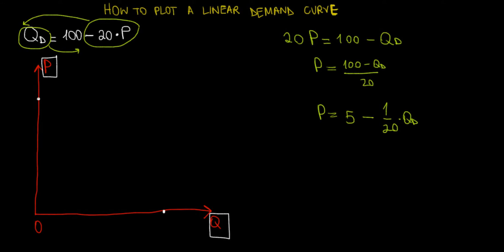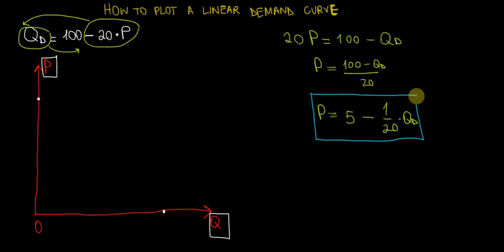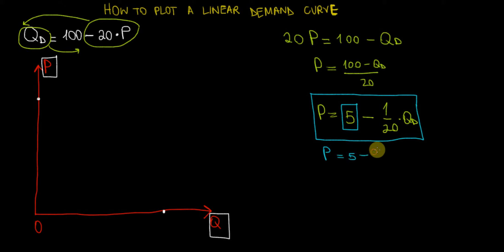We now have price as a function of quantity, as we would like to have it on our graph. The intercept on the price axis is going to be 5 — the intercept is the value of price when quantity is zero. Let's check: price when quantity equals zero is 5 minus 1 over 20 times zero, which equals 5. So the price intercept is 5, meaning over here on the graph we will have the value of 5.